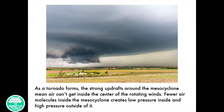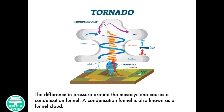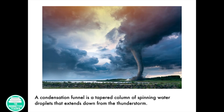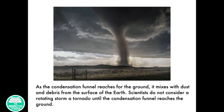As a tornado forms, the strong updrafts around the mesocyclone mean air can't get inside the center of the rotating winds. Fewer air molecules inside the mesocyclone creates low pressure inside and high pressure outside of it. The differences in pressure around the mesocyclone cause a condensation funnel, also known as a funnel cloud. A condensation funnel is a tapered column of spinning water droplets that extends down from the thunderstorm. As the condensation funnel reaches for the ground, it mixes with dust and debris from the surface of the earth.